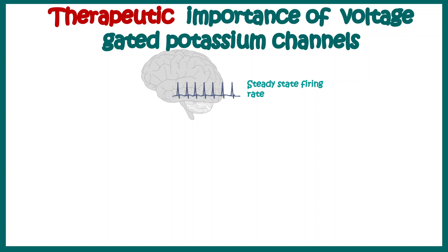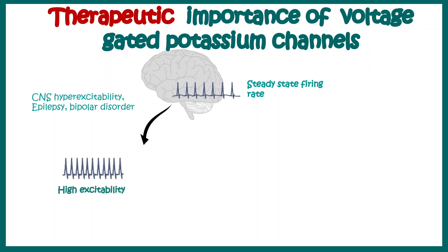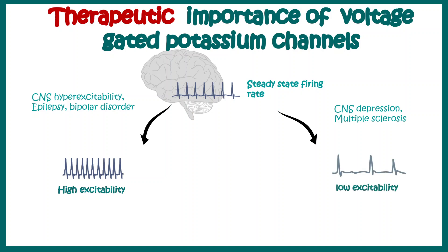This leads us to the therapeutic importance of voltage-gated potassium channel modulation. When there is a change in the steady-state firing rate, diseases can arise: hyper-excitability occurs in epilepsy or bipolar disorder where spike frequencies increase, while decreased spike frequency occurs in depression or multiple sclerosis. Using proper agonists or antagonists of KV channels might restore the firing frequency to a steady-state level, making KV channels important therapeutic targets.